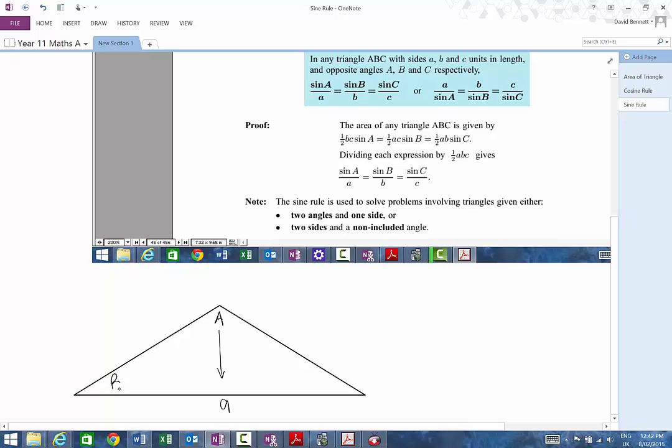If we've got this side B here, then the related side to that is in fact this one over here. Because as that angle changes, it will change the length of this side. And angle C relates to this side over here, C. If you get that, then that's the main thing.